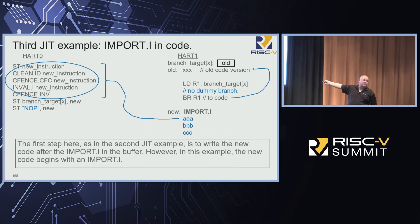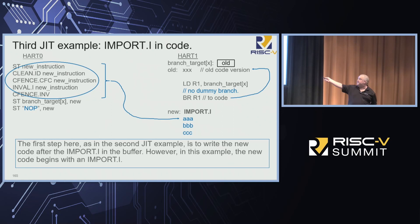Clean.ID may go away because your store is going to knock down your caches and I-fetches if your I-fetching is coherent and your D and I-caches are coherent. But if your I-fetching actually goes straight to memory but you make your stores update your I-caches, you still need clean.ID. So exactly which instruction you can get rid of is a dicey game of exactly the details of what you did and didn't do.